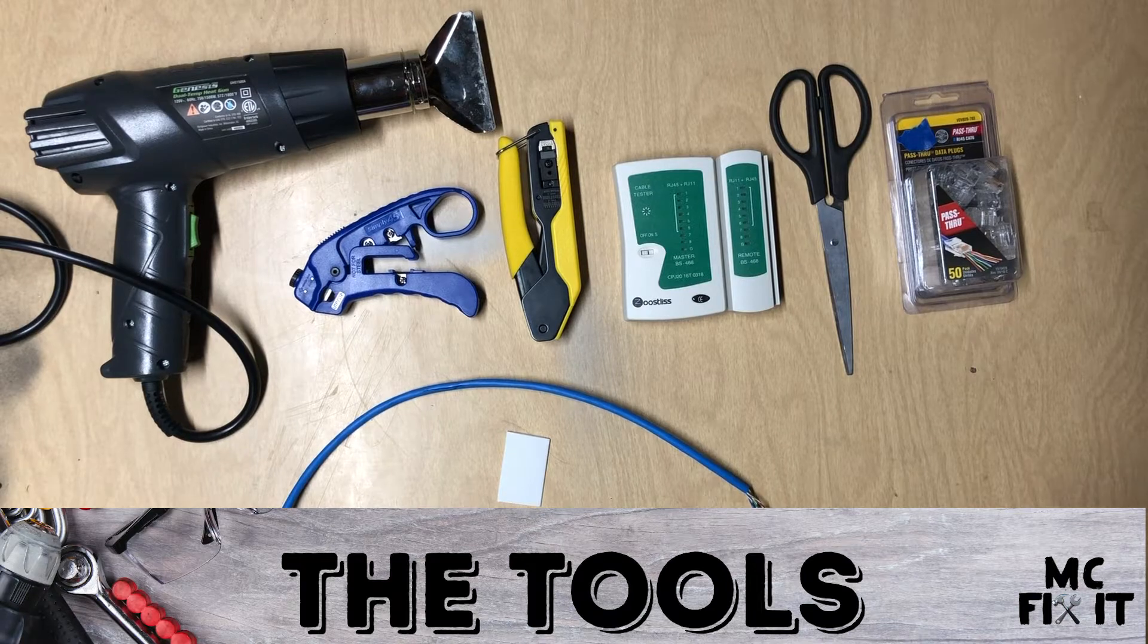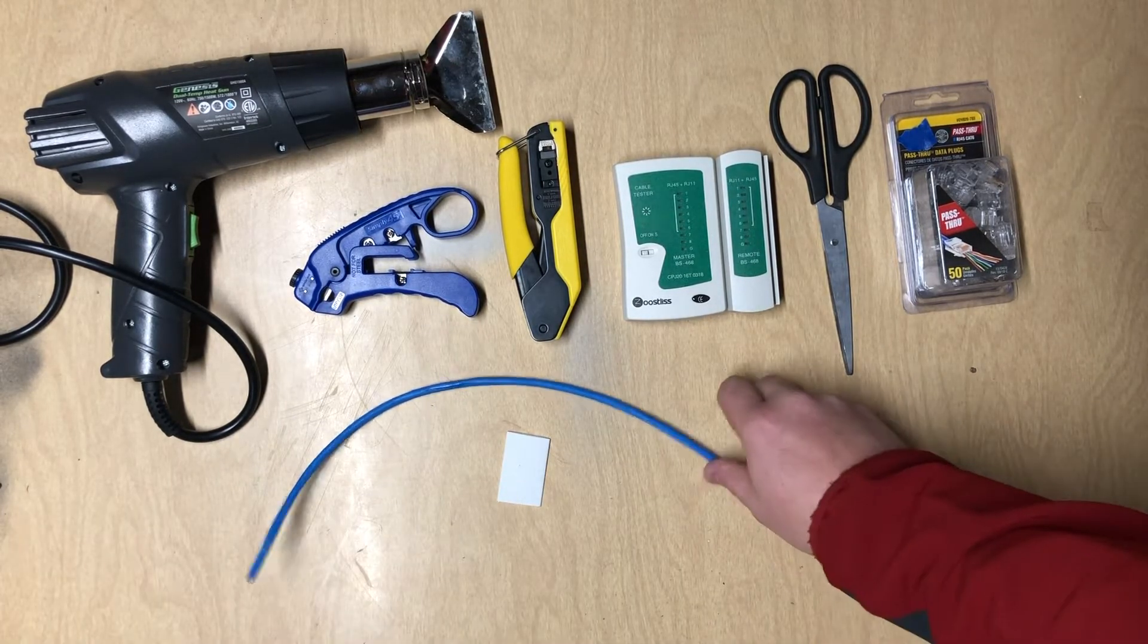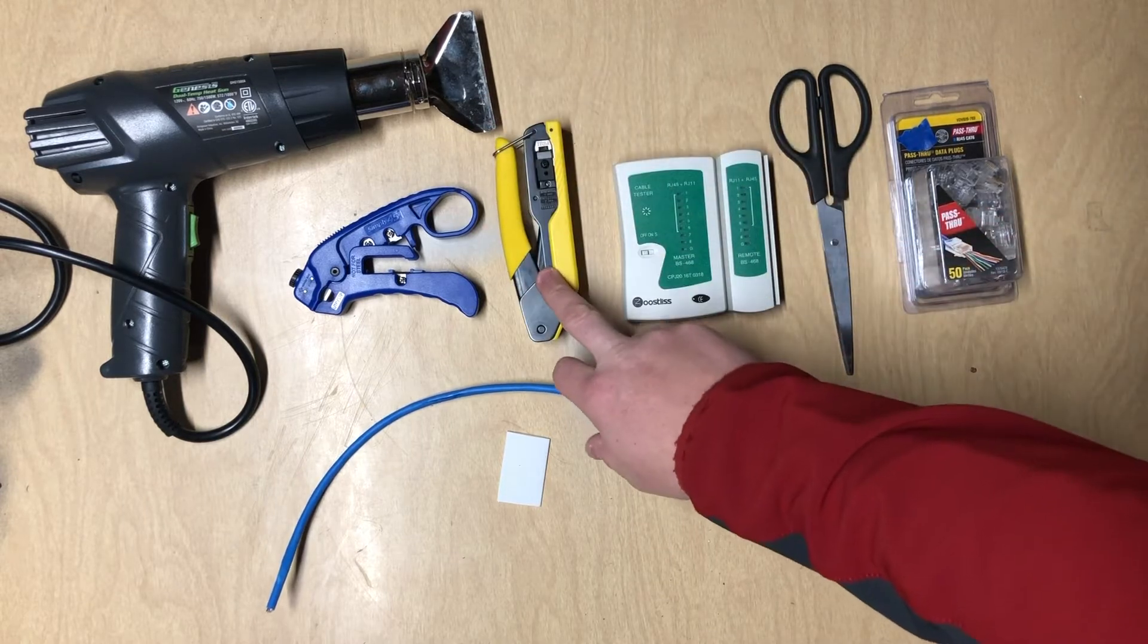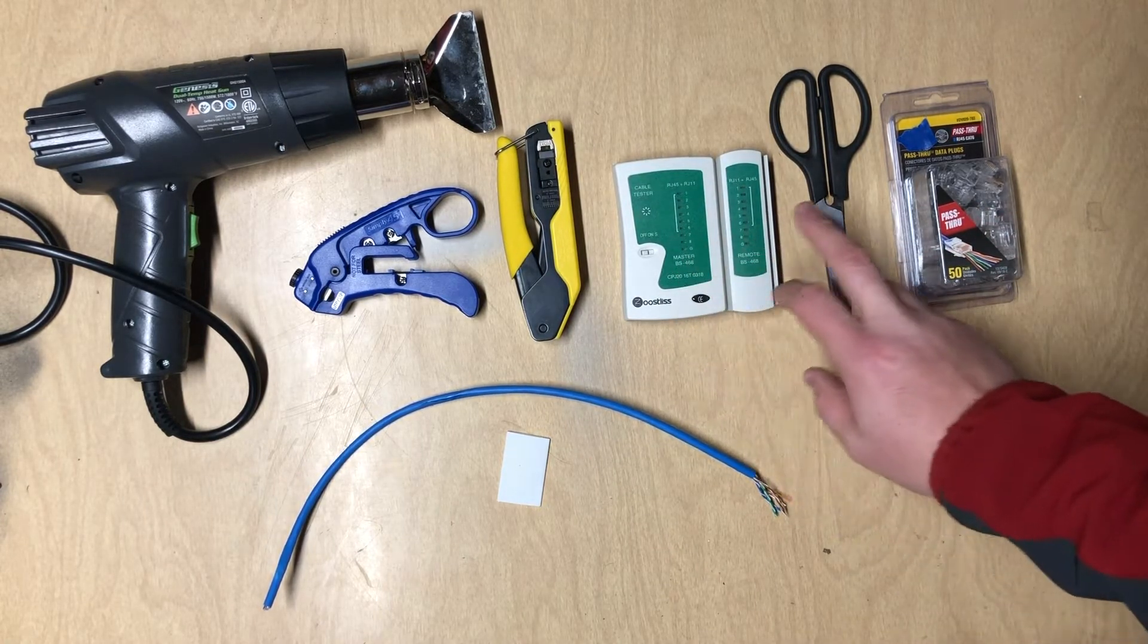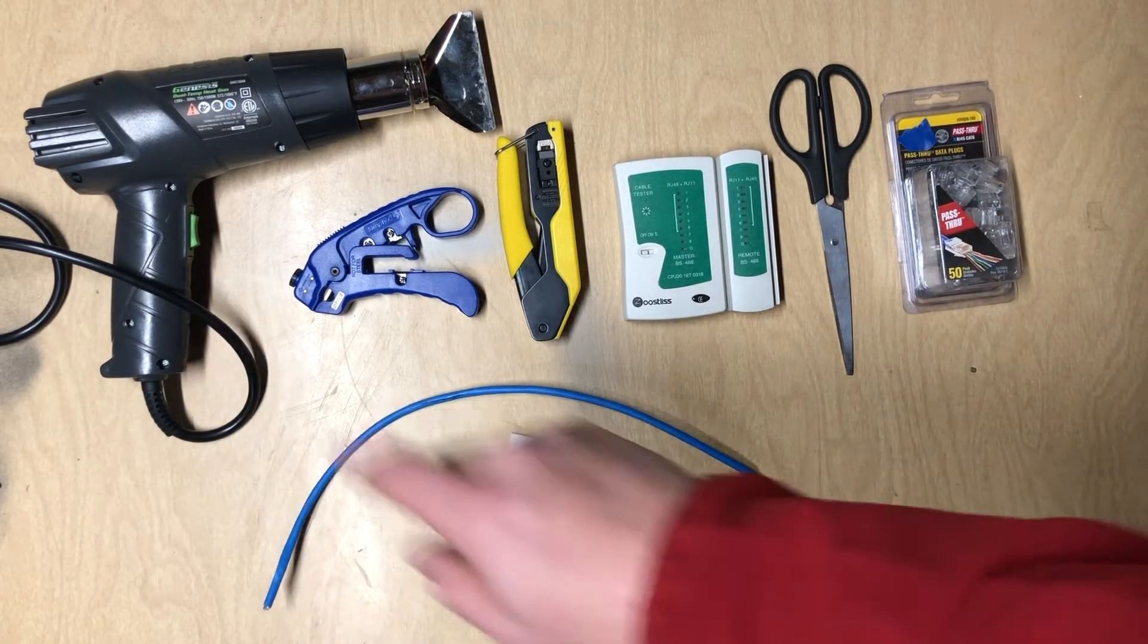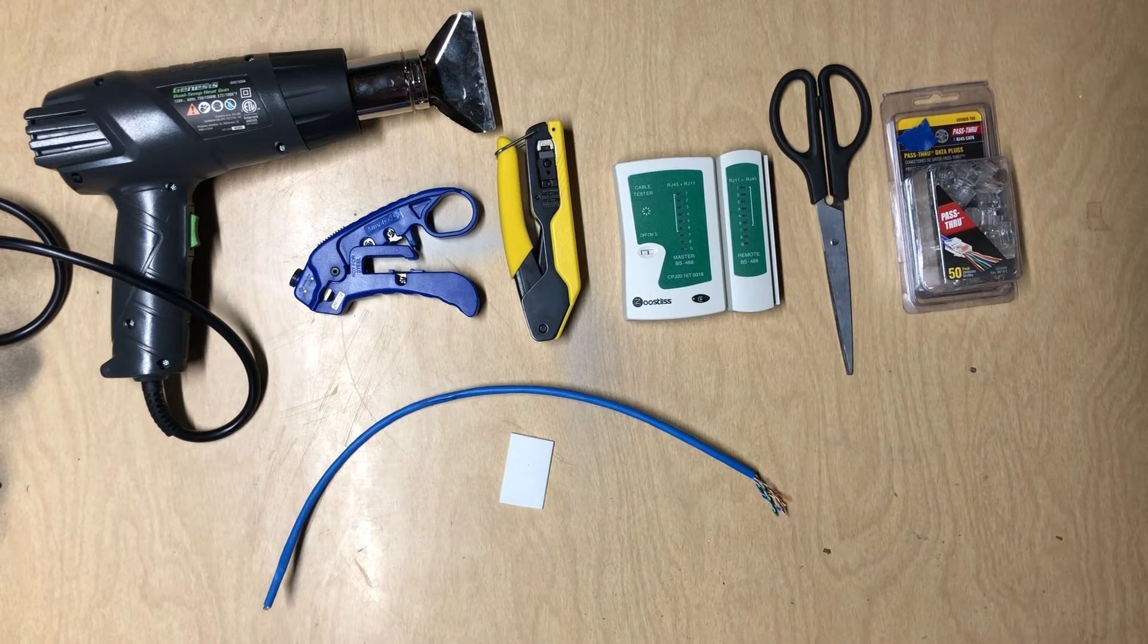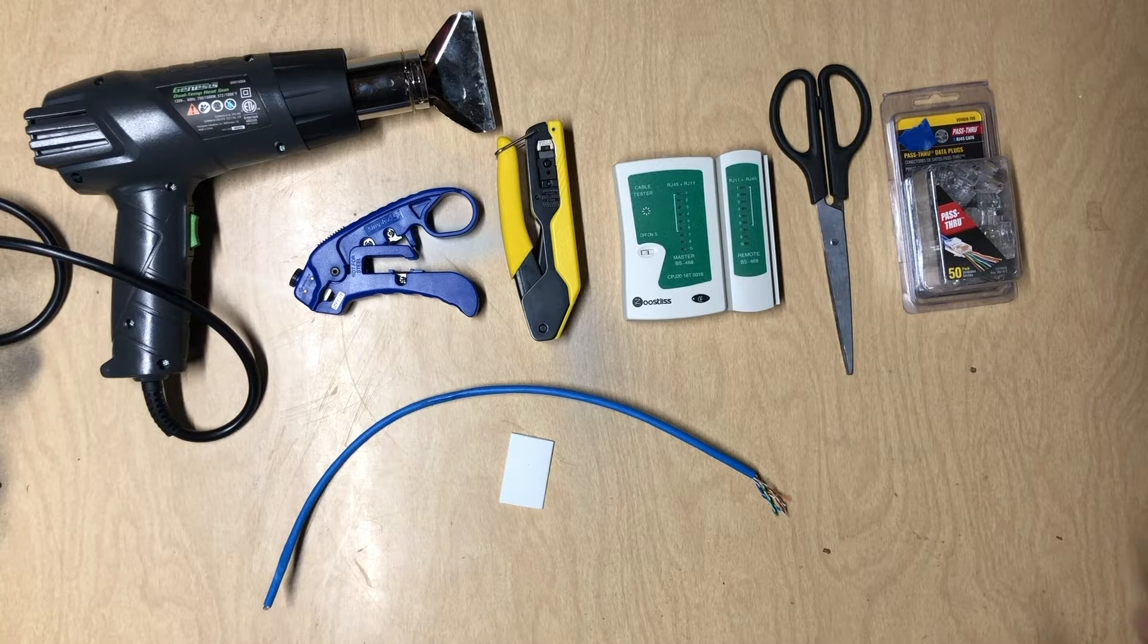Here are the tools you're going to need to complete this project. First, you need a stripper to strip back the end piece. You need a crimping tool—this is a pass-through crimping tool. A tester, pair of scissors, pass-through connectors, heat shrink wrap and gun. I do prefer to put heat shrink wrap over the crimped piece because it really does help keep it together and last a little bit longer.